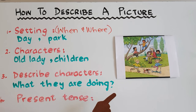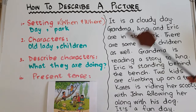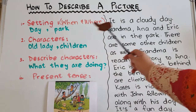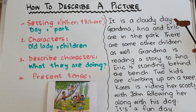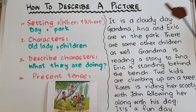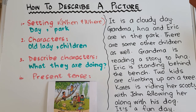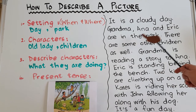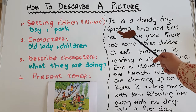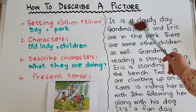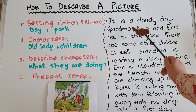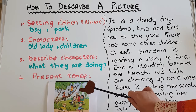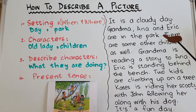Let's see this paragraph. 'It is a cloudy day.' As you can see the clouds — I have written 'cloudy day.' The kids can also write 'a sunny day' or 'a pleasant day,' depending on their vocabulary. 'Grandma, Anna, and Eric are in the park.' 'Is' and 'are' are both present tenses. Here I'm also describing the characters — grandma is the old lady — and the park is again the setting of the story.